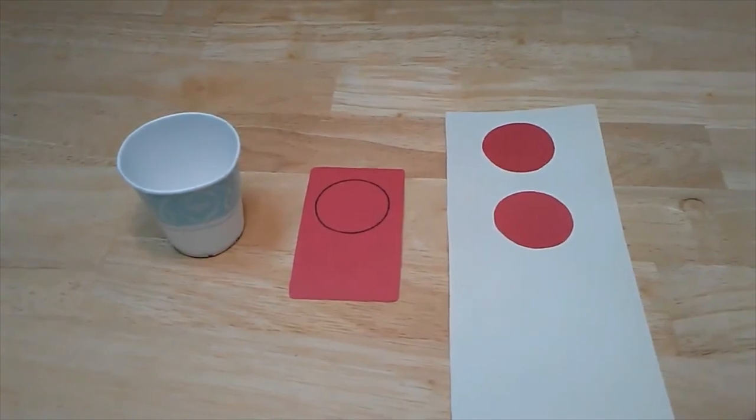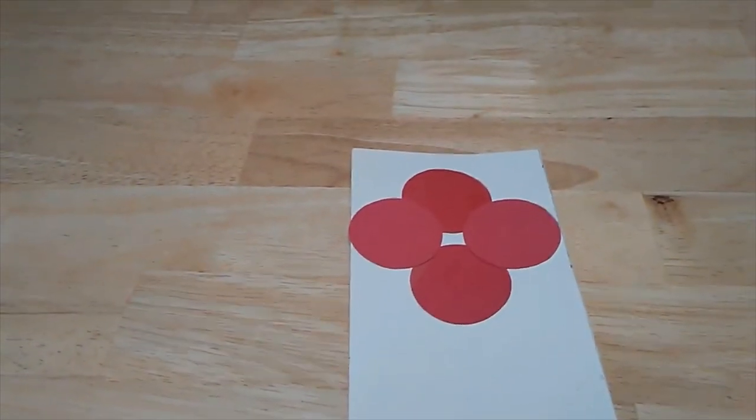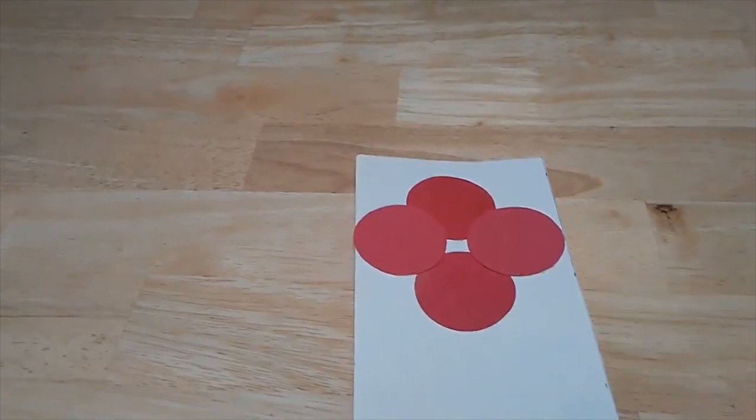I glued two of the circles above each other on a piece of paper. Next I glued two other circles on the left and the right side of my flower.